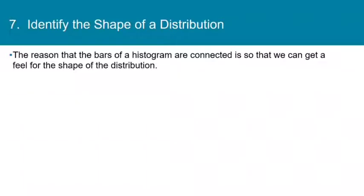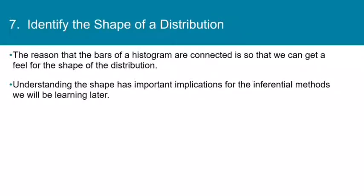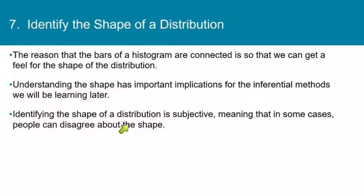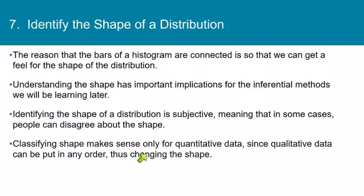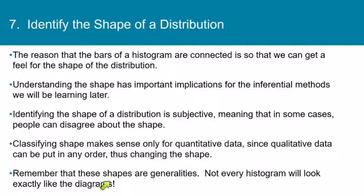Now let's talk about how to identify the shape of a distribution. In some ways this is the most important concept in this whole section, because we'll be talking about the shape of a distribution throughout the rest of the class. The reason the bars of a histogram are connected is so we can get a feel for the shape of the distribution — understanding the shape has important implications for the inferential methods we'll learn later. Identifying shape is subjective, meaning people might sometimes disagree. Classifying shape makes sense only for quantitative data, and remember these shapes are generalities.